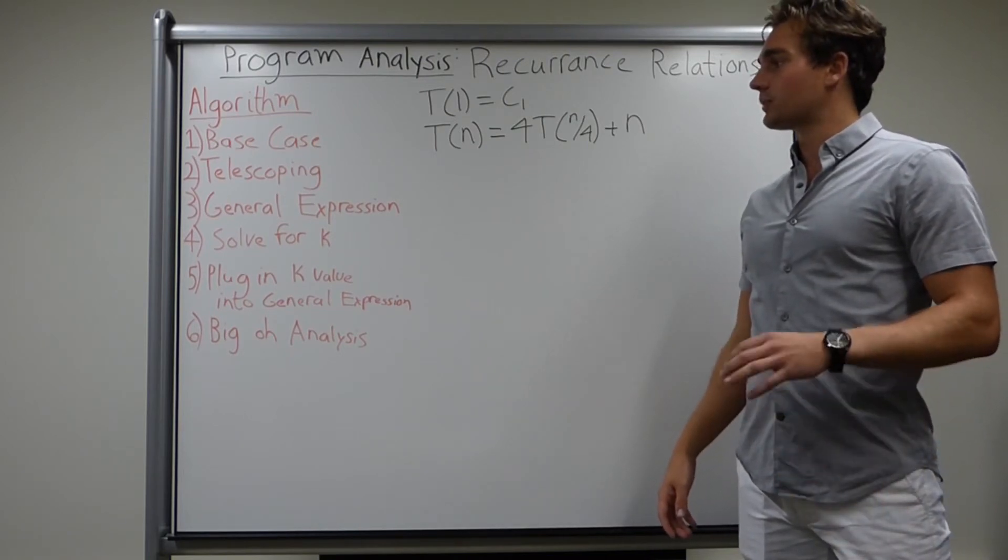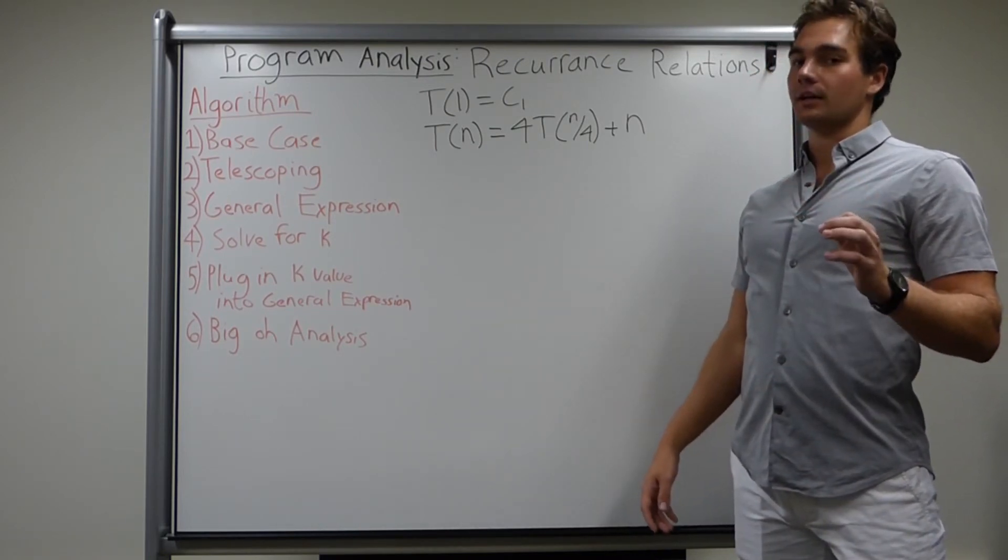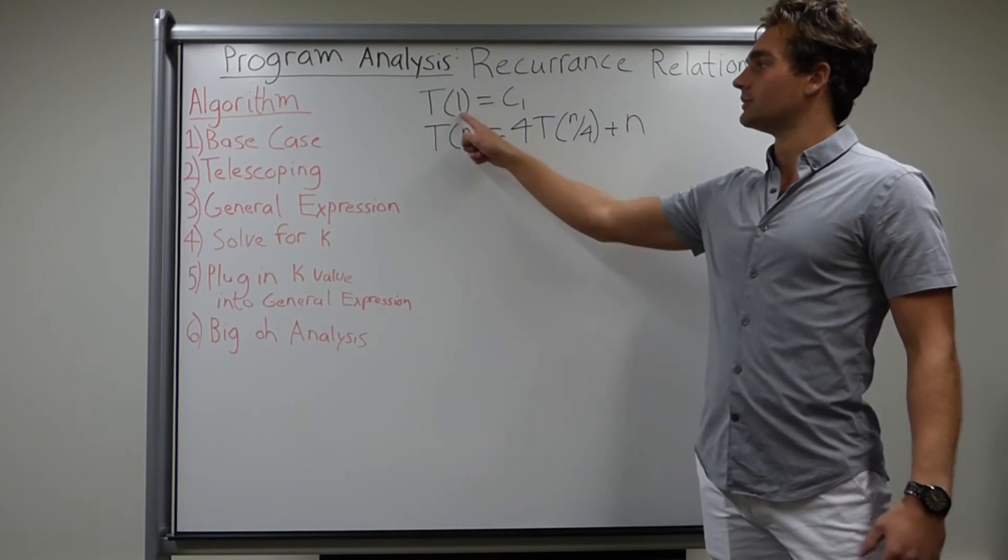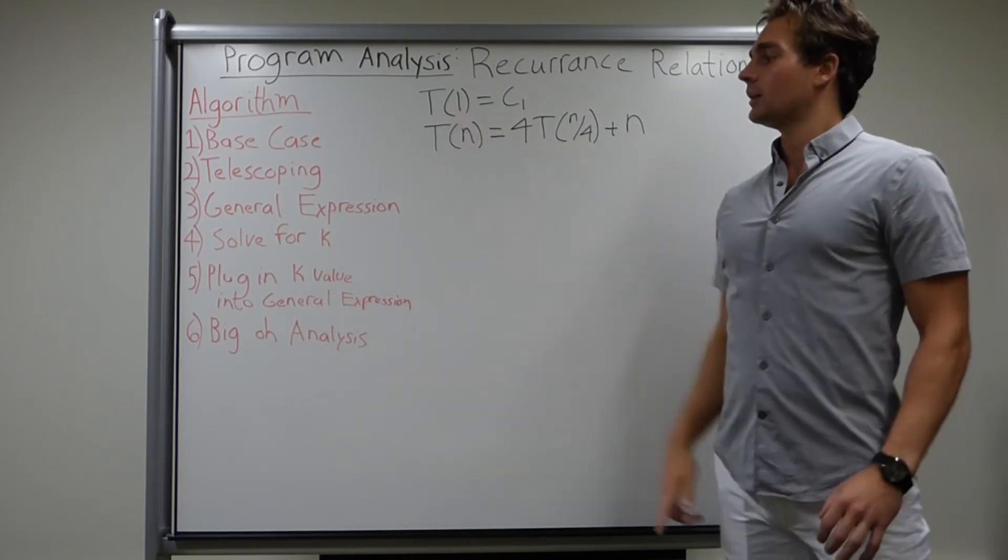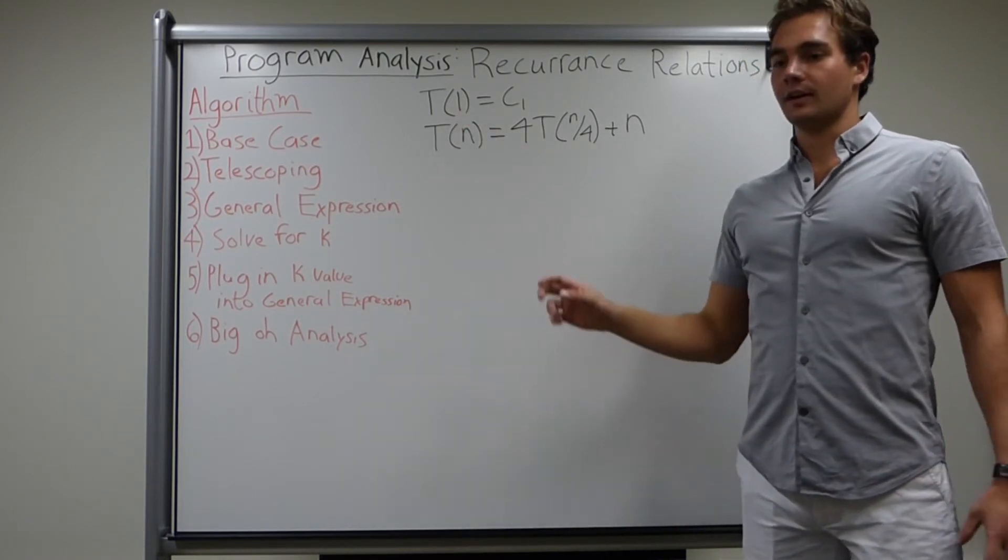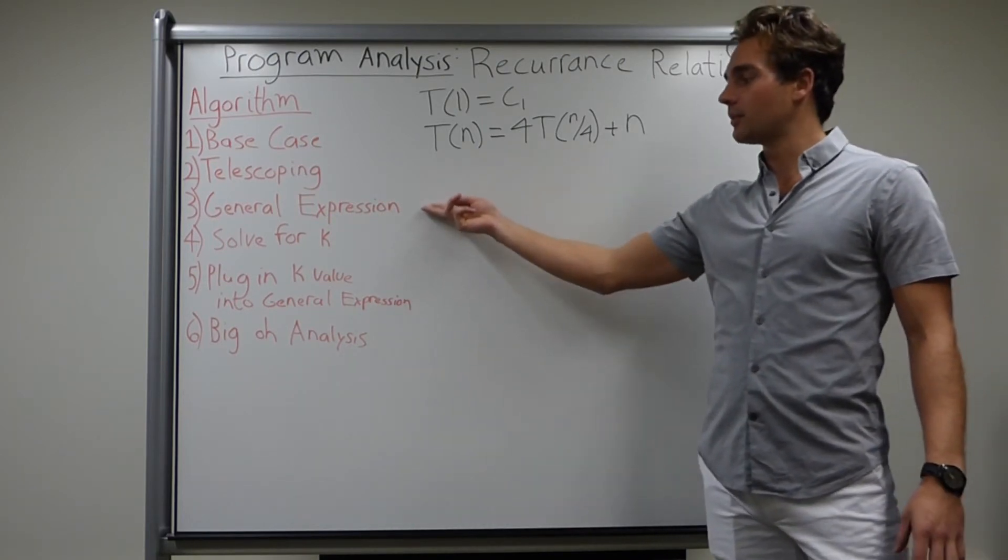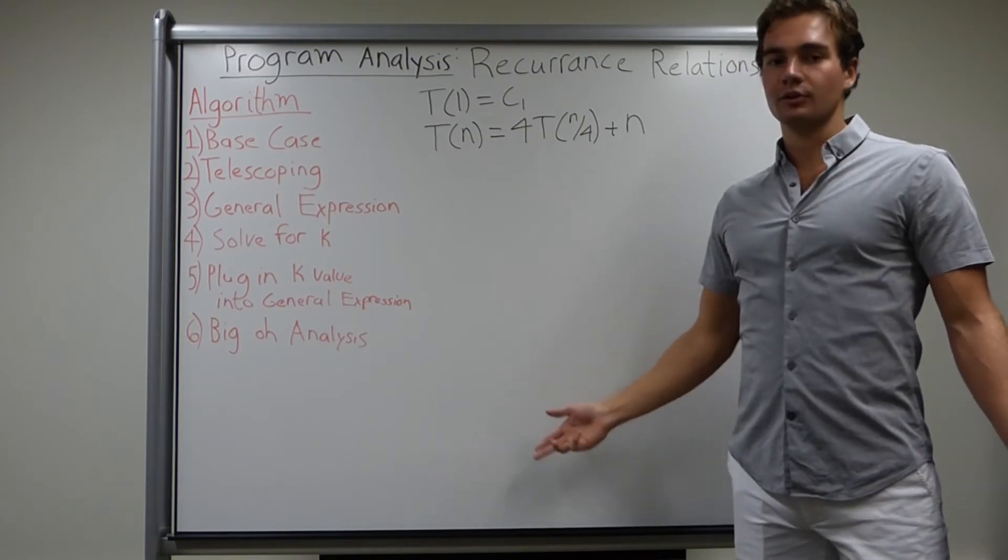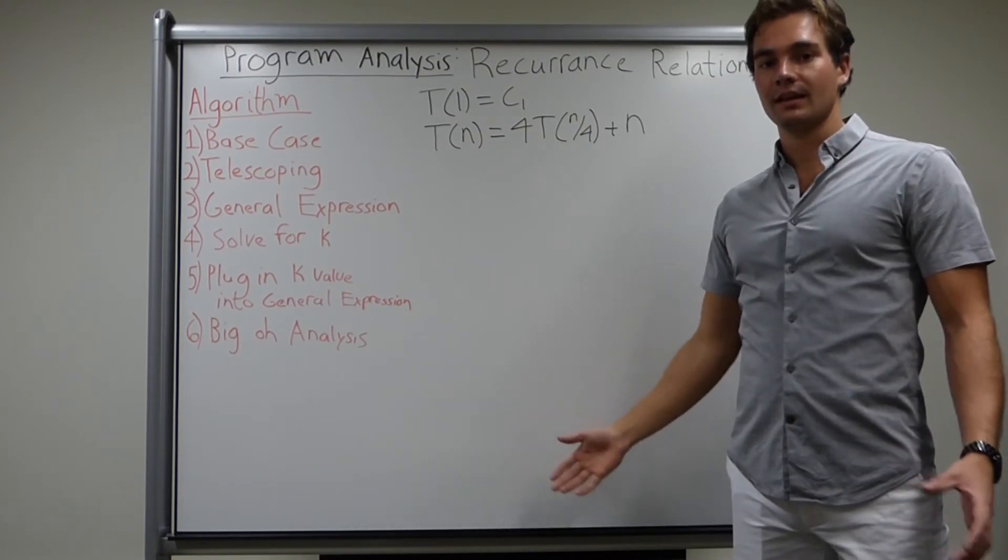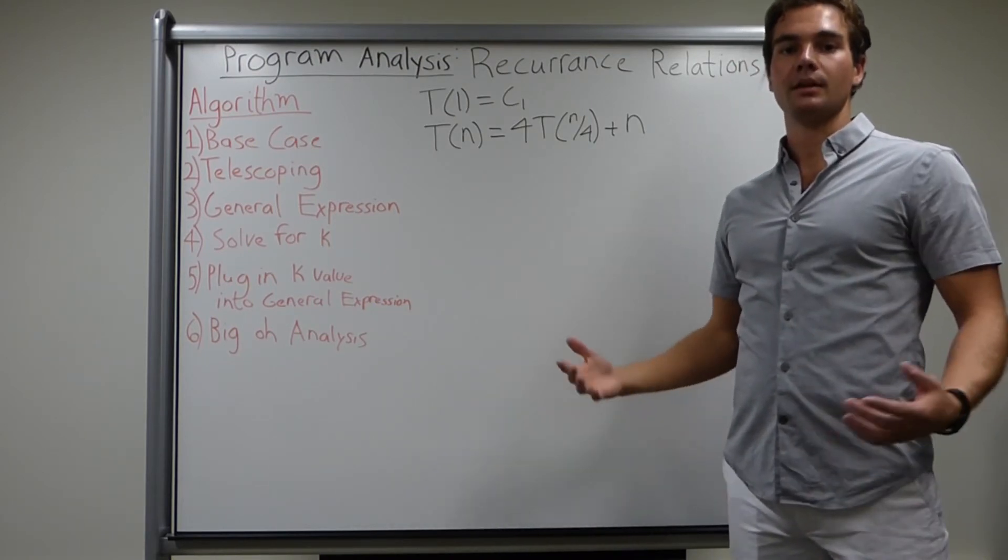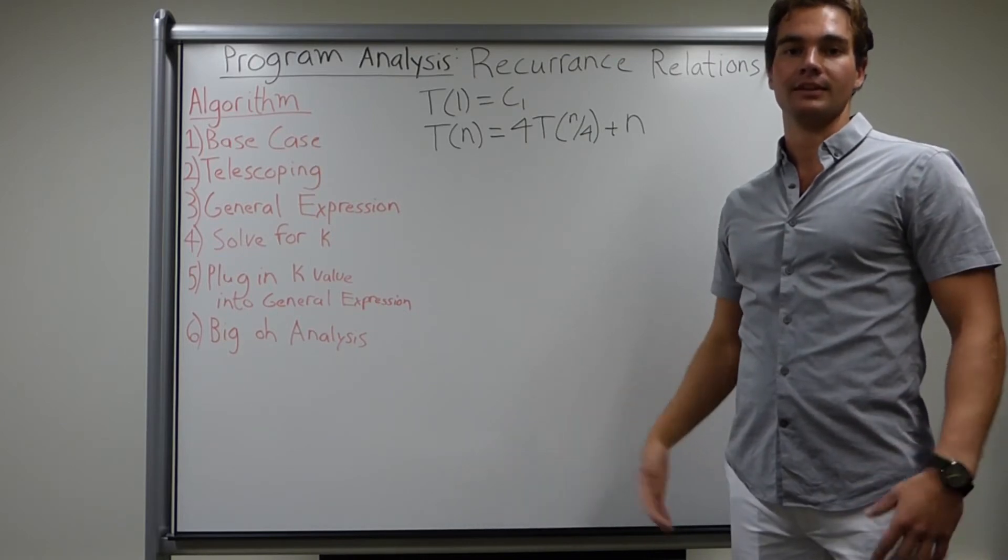Then, we're going to take that expression and solve for k by equating it to whatever is in the parentheses for the base case. Next, we're going to take our value of k that we just solved for, plug it into the equation, the general expression that we came up with, and then we're going to do big O analysis on that expression to come up with a big O or an upper bound for the entire program.